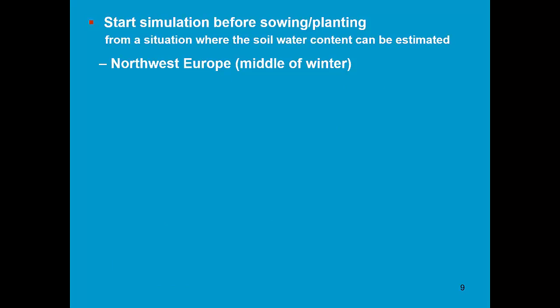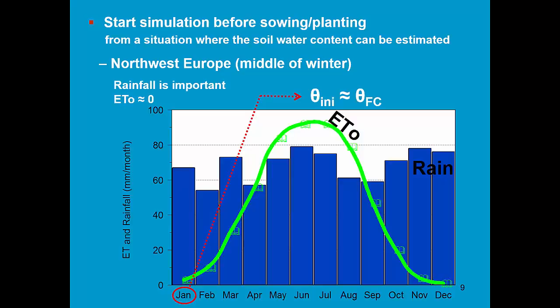In the middle of winter, we have rainfall but evapotranspiration is very low. In this graph, you see the rainfall and the ET for Brussels. We can see that due to the absence of evapotranspiration but still important rainfall, in winter the soil will be at field capacity. So I'm quite sure that at the beginning of January, my soil will be at field capacity. So I will take that as an estimate of the initial soil water content.